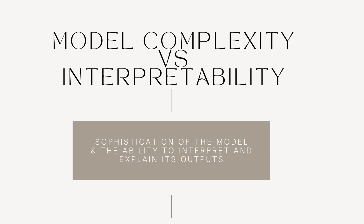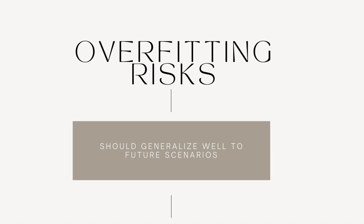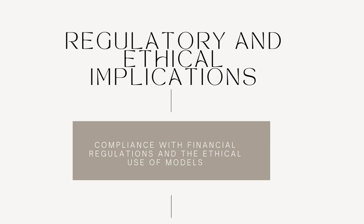Consider model complexity versus interpretability — balance the sophistication of the model with the ability to interpret and explain its outputs. Sometimes very complex models are not the right choice; sometimes simpler models actually do the work better. Be aware of overfitting risk: be cautious of models that fit historical data too closely, as they may not generalize well to future scenarios. Finally, consider regulatory and ethical implications — compliance with financial regulations and ethical use of models, especially in areas like credit scoring and algorithmic trading.